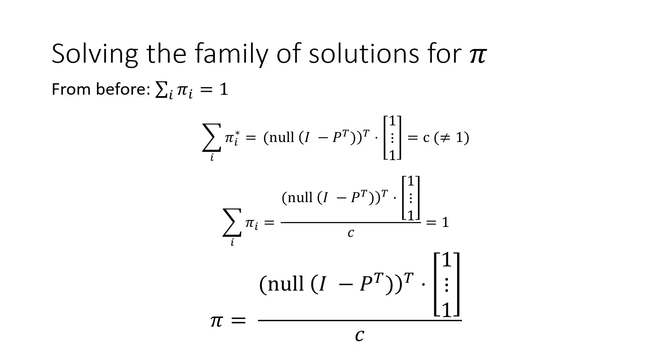Now, in order to solve this family of solutions for π, we need to recall that the sum of the entries of π has to be equal to 1. This will give us a unique solution defined as shown. We multiply the transpose of the family of solutions by the vector of 1s, and then divide the vector by a constant so that the entries sum to 1.